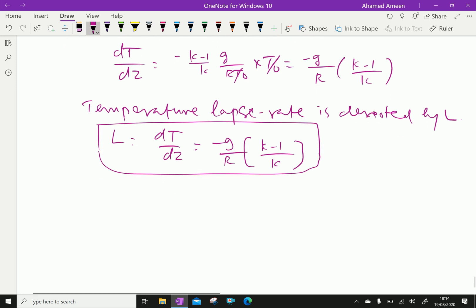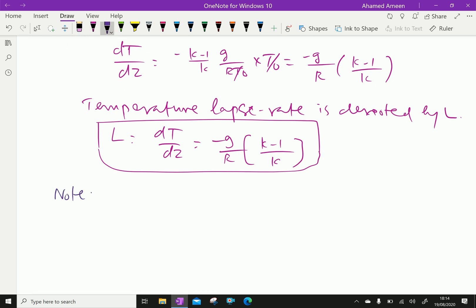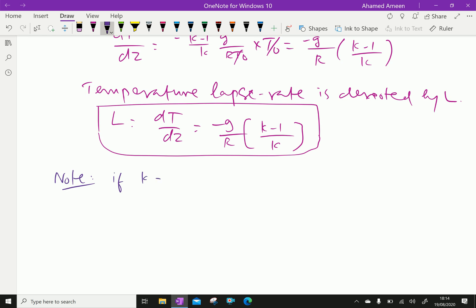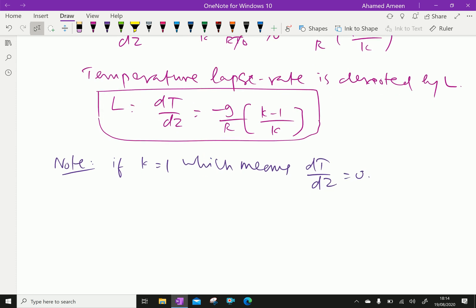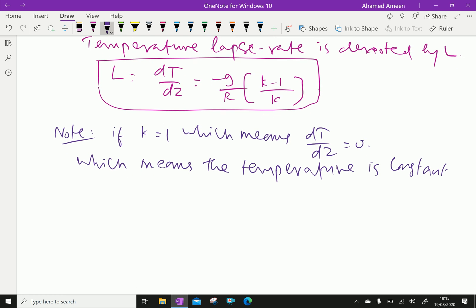Now, note the points here. If k equal to 1, it becomes 0, that means dT by dZ equal to 0, which means there is no temperature changes, which means the temperature is constant with height.